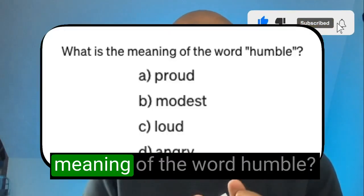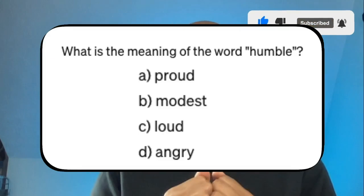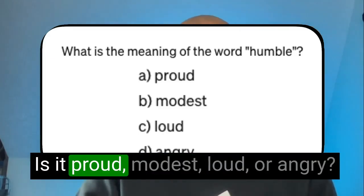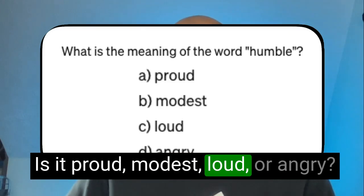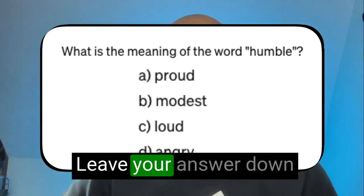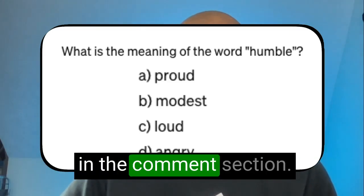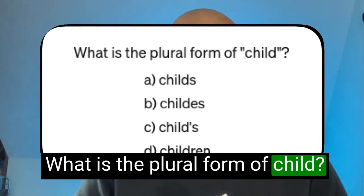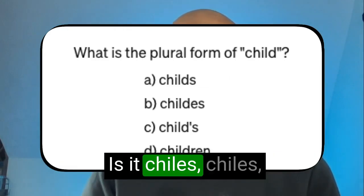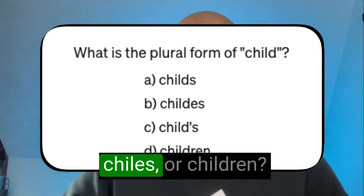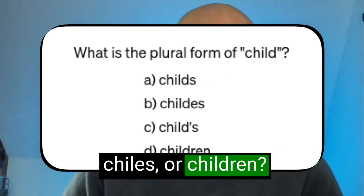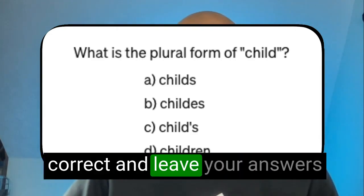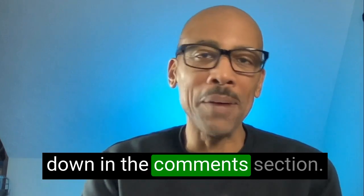The first question is: what is the meaning of the word 'humble'? Is it proud, modest, loud, or angry? Leave your answer in the comment section. Second question: what is the plural form of 'child'? Is it child, childs, childrens, or children? Let's see if you can get these two correct.